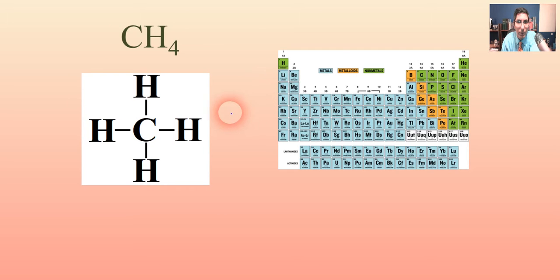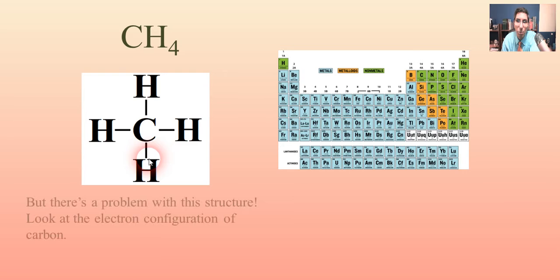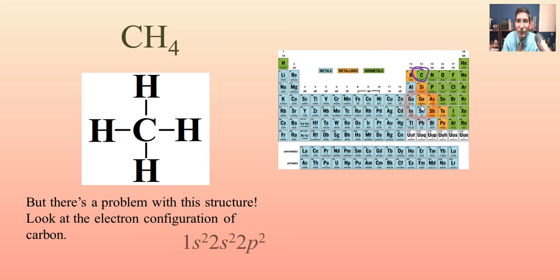Now this looks very fine, but when you start to examine this a little bit closer, it may seem that there's a problem with this structure. Carbon is making four bonds with these different hydrogen atoms, but when we look at the electron configuration of carbon,